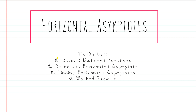Our to-do list: first we will have a review of rational functions, because we find horizontal asymptotes in rational functions. Second, we will give you a definition of a horizontal asymptote so you actually know what it is. Then we will discuss how to find horizontal asymptotes, and we will see if you can say asymptote three times quickly without smiling, after which we'll do a worked example. I'll put all the timestamps in the video description so you can move ahead if you want.